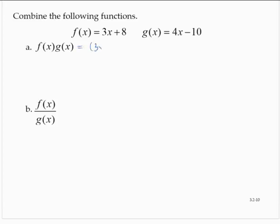Well, that would be 3x plus 8 by 4x minus 10. There's a couple of different approaches to this. But basically, what we need to do is take each term of the first polynomial and multiply it by each term of the second polynomial.